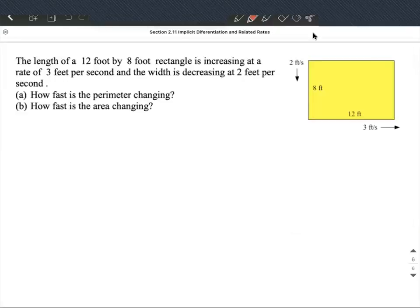Okay, a related rates problem. In this case, we have a rectangle as laid out on the right-hand side, 12 feet by 8 feet, and is increasing at a rate of 3 feet per second on the 8 foot side, and the width is decreasing by 2 feet per second. So it's kind of mapped out over on the right-hand side. What we want to do is first of all figure out in part A how quickly is the perimeter changing.